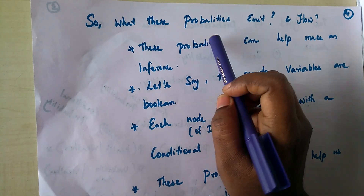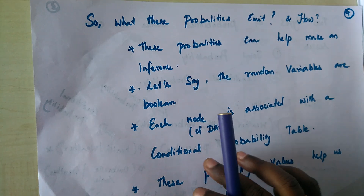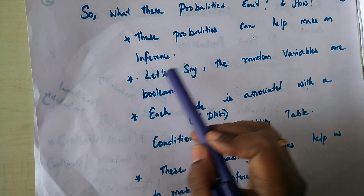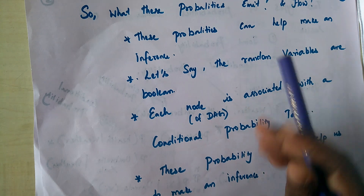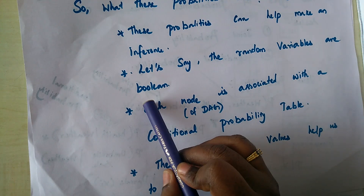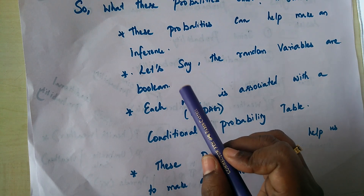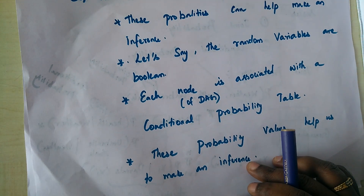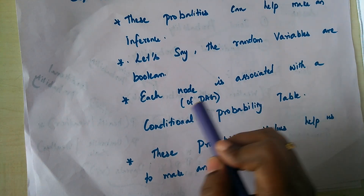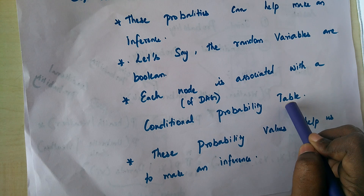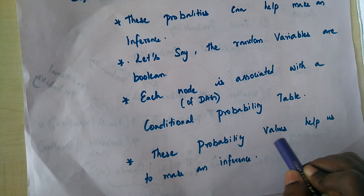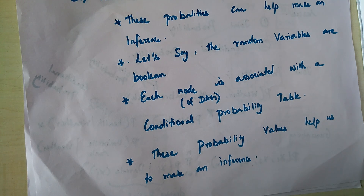These probabilities help us make an inference. If these random variables are boolean, each random variable takes a value of either 0 or 1. Each node in the DAG will have a conditional probability table, and these conditional probabilities help us make the inference.